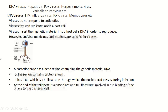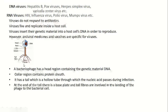Here we see the typical structure of a bacteriophage. It has a head, neck, collar, sheath, tail fiber, base plate, and DNA. The head region contains the genetic material DNA. The collar region contains the protein sheath. It has a tail which is a hollow tube through which the nucleic acid passes during infection. At the end of the tail, there is a base plate, and tail fibers are involved in binding the phage to the bacterial cell.